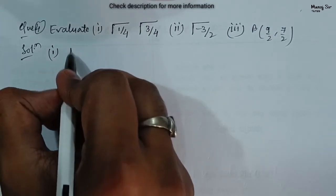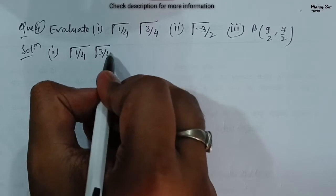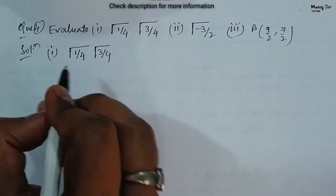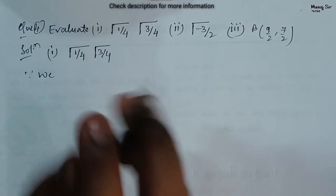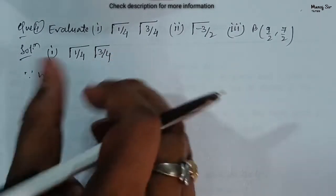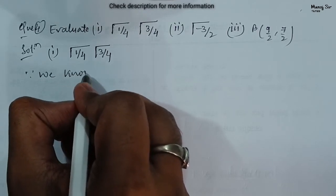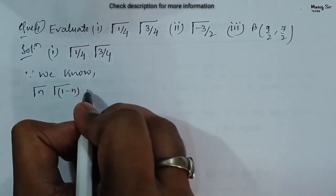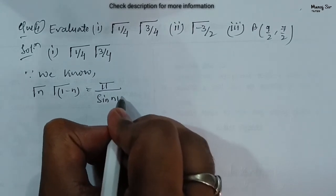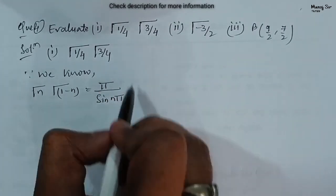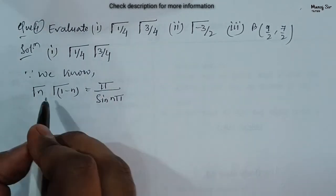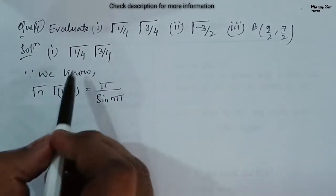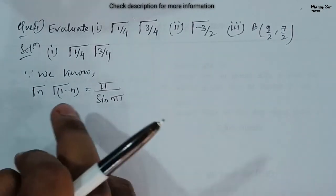Solving the first part: gamma of 1/4 times gamma of 3/4. In the previous video, video number 23, we established the important result that gamma(n) times gamma(1 − n) equals π divided by sin(nπ). We can use this formula when the two arguments add up to 1. Here, 1/4 plus 3/4 equals 1, so we can use this formula.